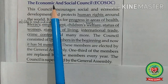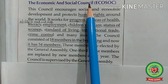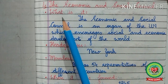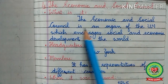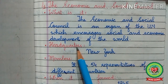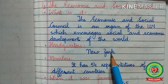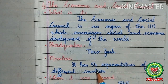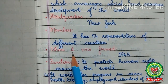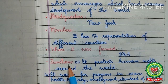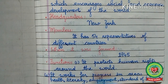Now open page 162 of the book. The topic is the Economic and Social Council. The first question: what is it? The Economic and Social Council is an organ of the UN which encourages social and economic development of the world. Headquarters: located in New York City, United States of America. Members: it has 54 representatives of different countries at present. When it was formed: it was formed in 1945. The main function: it protects human rights around the world.